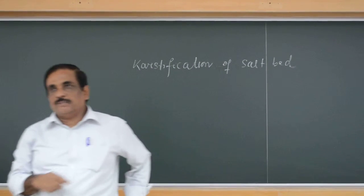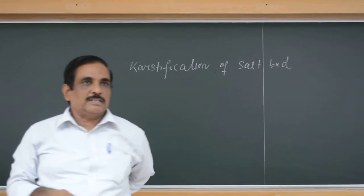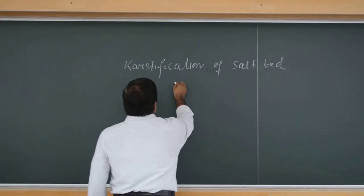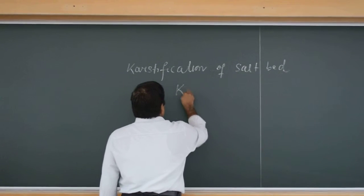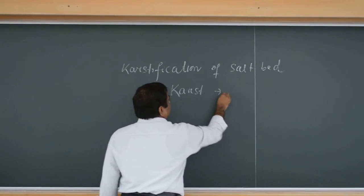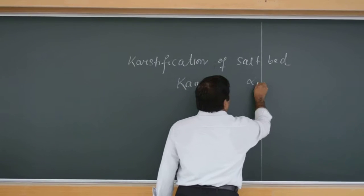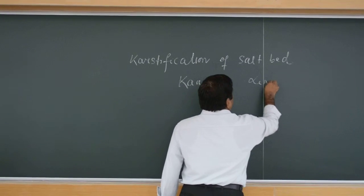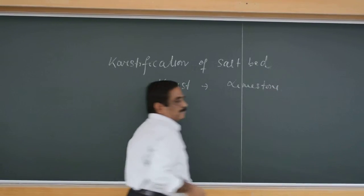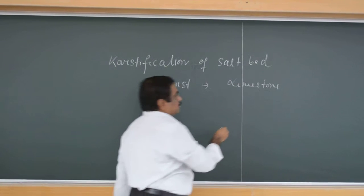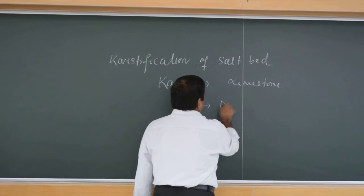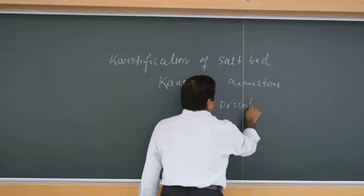You know the definition of karstification, right? What is karst? Karstification or karst topography happens in a limestone country. Limestone areas are found in certain terrains where, because of dissolution, the limestone dissolves.